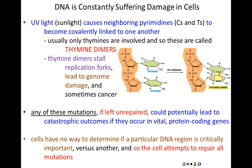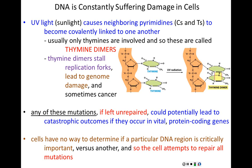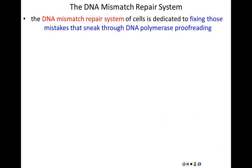Cells don't have a mechanism to recognize whether a mutation occurred in a critical or non-critical region of DNA — they can't distinguish important from unimportant DNA. So cells do the only thing they can: attempt to repair all mutations in real time as quickly as possible. The first repair mechanism we'll discuss is DNA mismatch repair, which is dedicated exclusively to finding mistakes made by DNA polymerase that escaped the proofreading mechanism during replication.